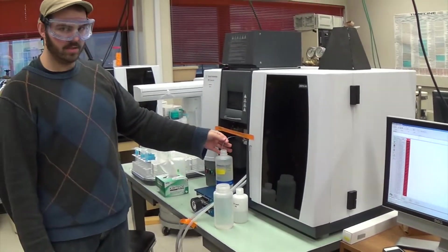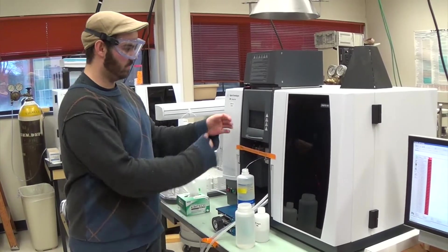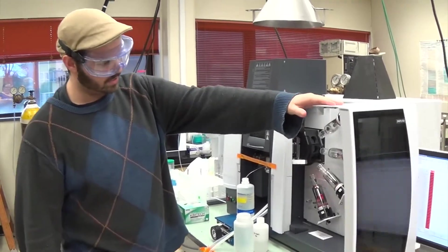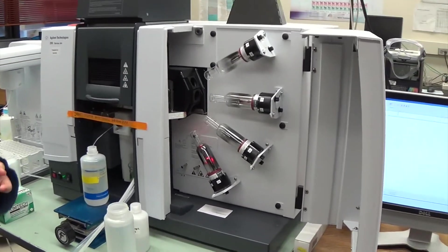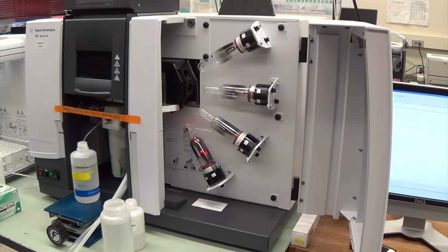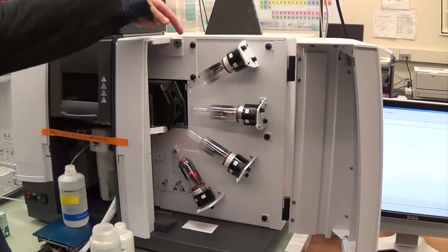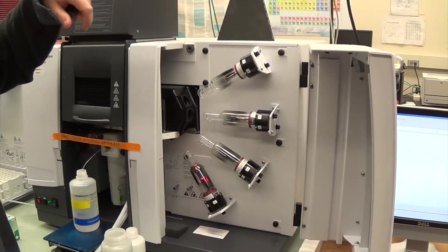We have our water bottle in the aspirator tube, which introduces the sample into the flame. Over here are the different light sources. Every instrument has a source, sample introduction, and a detector. So these are the sources. Each one of these is specifically designed for the metal you want to analyze.